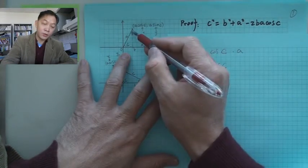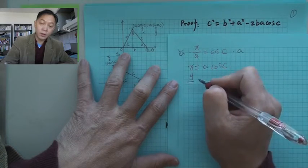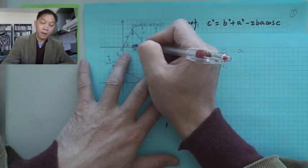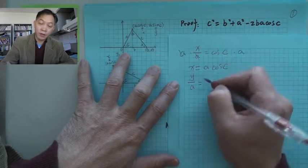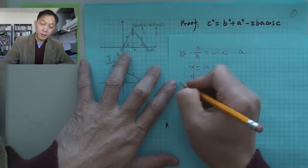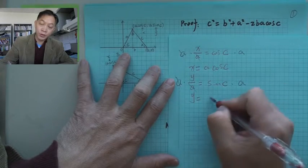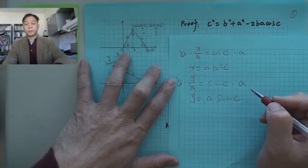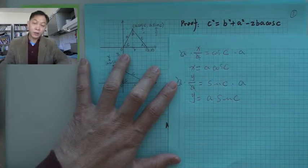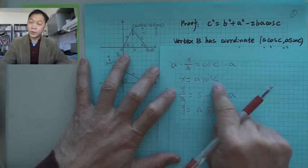Similarly, in this right triangle, y is the y-coordinate for B. And y over a — that's the opposite side over hypotenuse — equals sine C. Multiplying both sides by a, you get y equals a sine C. So vertex B has the coordinates (a cosine C, a sine C).